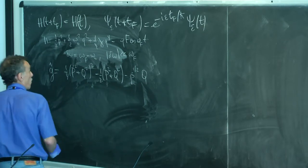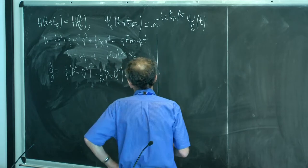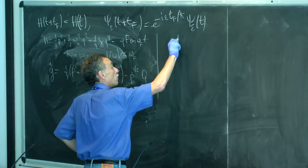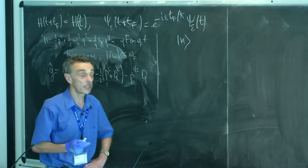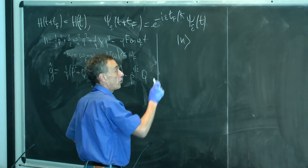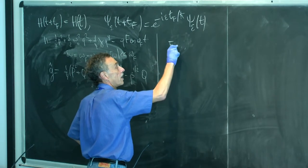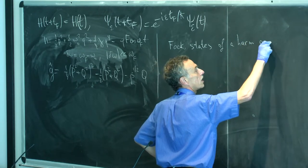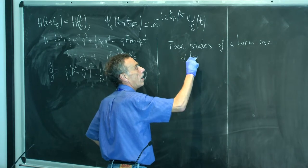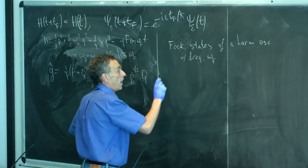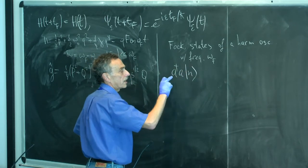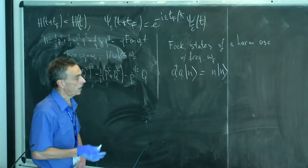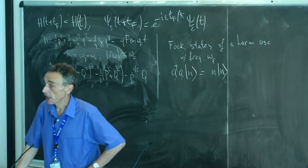This is a Hermitian Hamiltonian, and its eigenvalues and eigenfunctions are orthogonal with real eigenvalues. Because we made a set of canonical transformations, we expect they form a full set. What is important is that if we are talking about a harmonic oscillator, we use Floquet states of a harmonic oscillator with frequency omega-f, not omega-naught. These states are defined as eigenstates of the raising and lowering operators, and this set of states is orthogonal and complete.